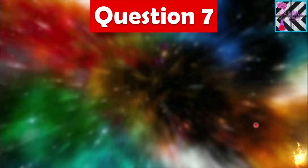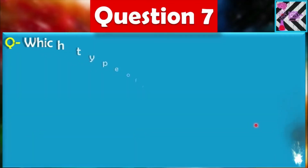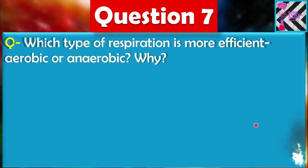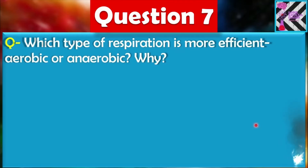Question number seven: Which type of respiration is more efficient — aerobic or anaerobic? Why? Aerobic respiration completes in the presence of oxygen and is present in all higher organisms. Anaerobic respiration is present in the lower-most categorized organisms and occurs in the absence of oxygen. Let's see the answer.